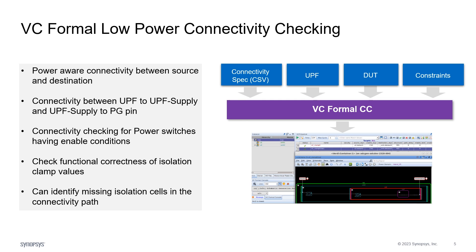VC Formal Low Power Connectivity Checking helps to identify issues present in the power intent specified in the UPF file without using a complex simulation test bench. You can identify connection issues between UPF to UPF supplies and UPF supplies to PG pins. You can also check connectivity between power switches having enabling conditions, verify correctness of isolation cells, and identify mismatch between power intent and functional specification.